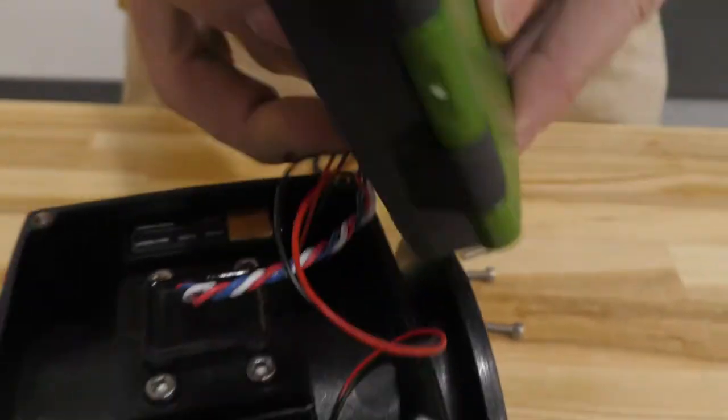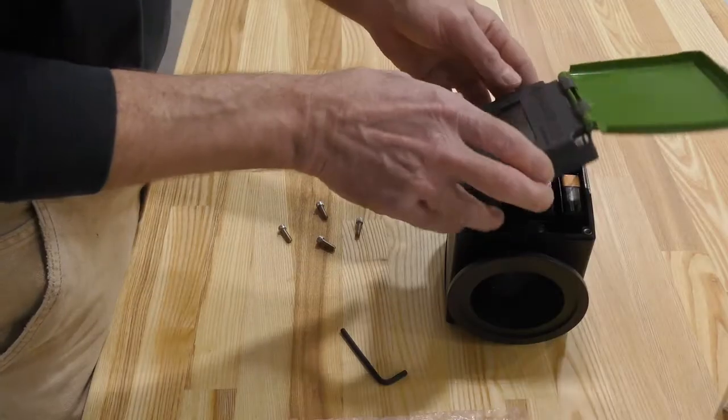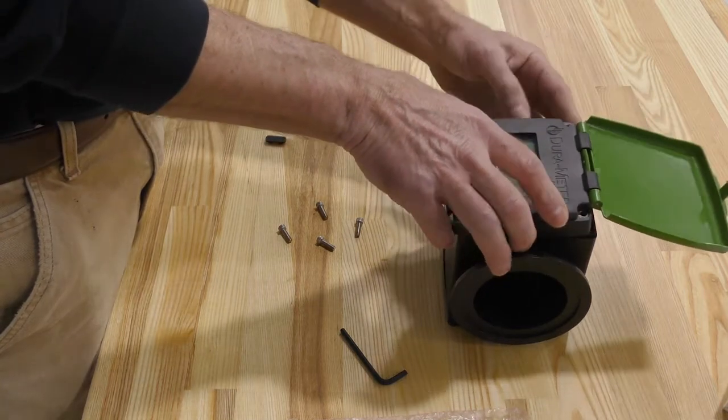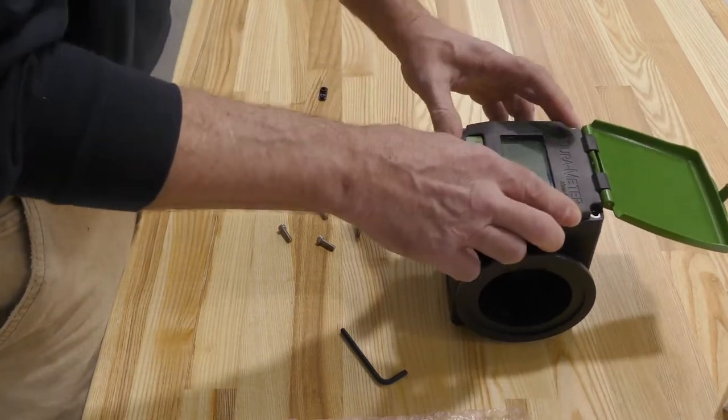Position the face plate onto the meter body, ensuring the wires are not being pinched. Place all four bolts in place and start threading them in by hand.